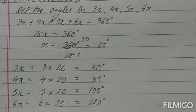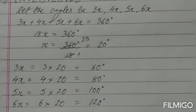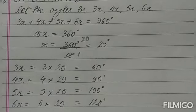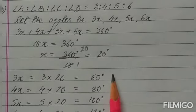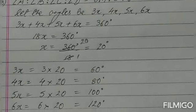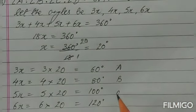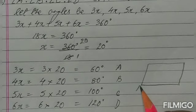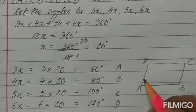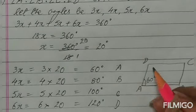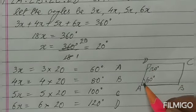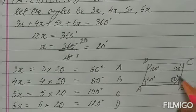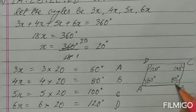There is one more part: they want to know whether it forms a trapezium and what the parallel sides are. Looking at the angles A, B, C, and D — angle A is 60 and angle D is 120, together forming 180 degrees. Similarly, angle C is 100 and angle B is 80, again forming 180 degrees. That means one side is running parallel to the other, confirming it is a trapezium.